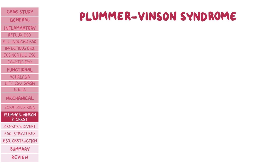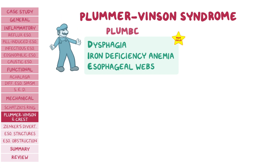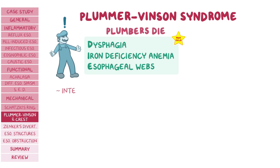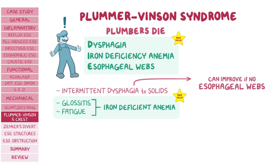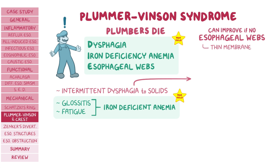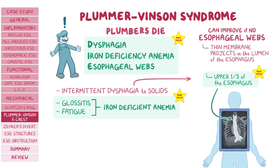The next one is Plummer-Vinson syndrome. The high yield concept here is that Plummer-Vinson syndrome is known for causing dysphagia, iron deficiency anemia, and esophageal webs. These individuals can present with intermittent dysphagia to solids, but also glossitis and fatigue due to iron deficiency anemia. The symptoms of dysphagia can improve with correction of iron deficiency anemia if there are no advanced esophageal webs. Unlike Schatzky's ring, an esophageal web is mostly found in the upper third of the esophagus and does not occupy the entire circumference of the lumen. Plummer-Vinson syndrome is associated with an increased risk of squamous cell carcinoma.